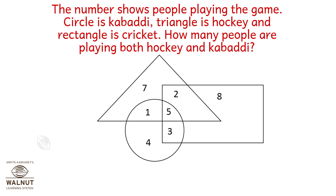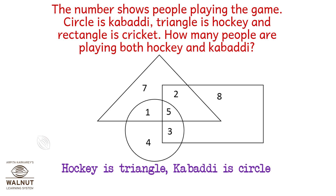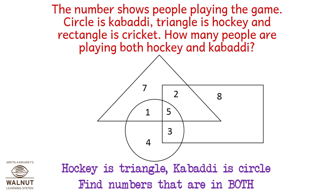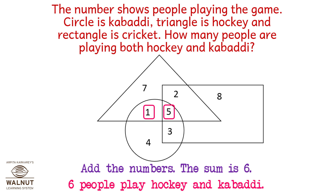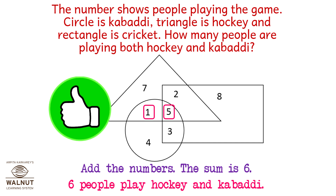This diagram shows the number of people playing a game. Circle is Kabaddi, triangle is hockey, and rectangle is cricket. How many people are playing both hockey and Kabaddi? Hockey is the triangle and Kabaddi is the circle. The numbers in both are 1 and 5 — we add them up to get 6. So 6 people play hockey and Kabaddi. That brings us to the end of this lesson.